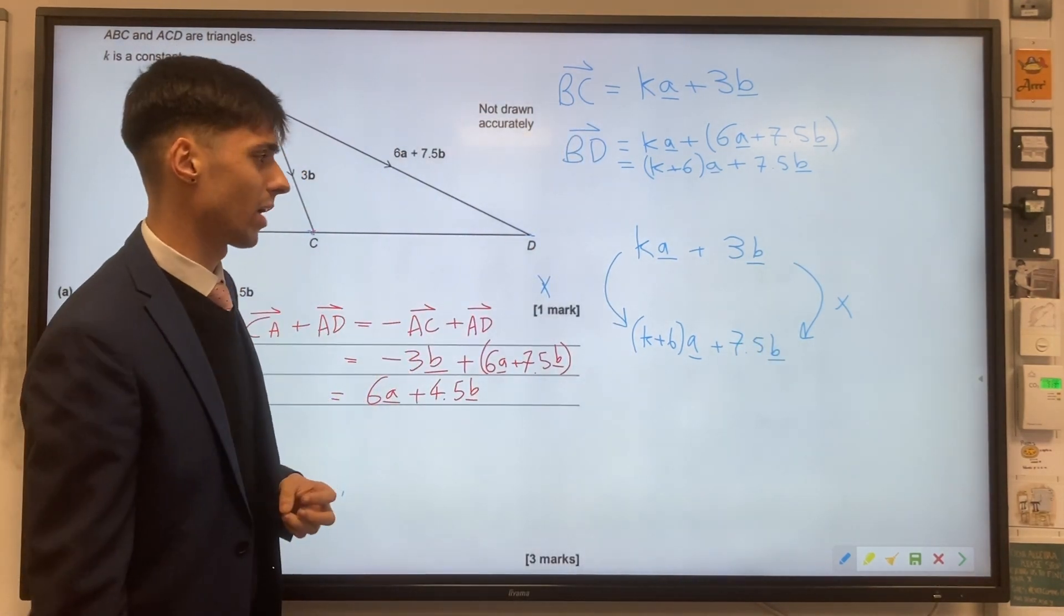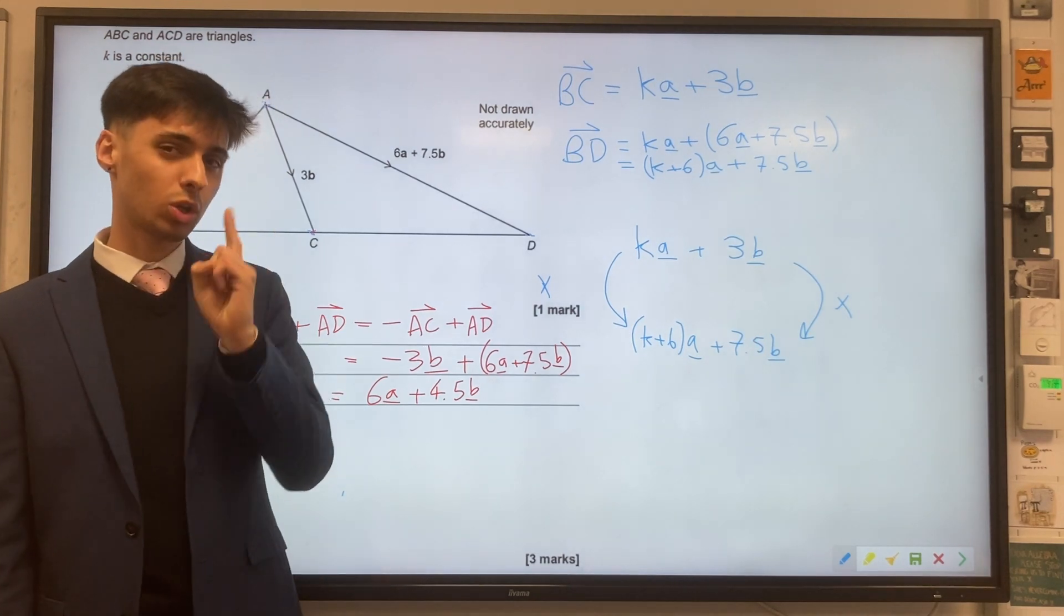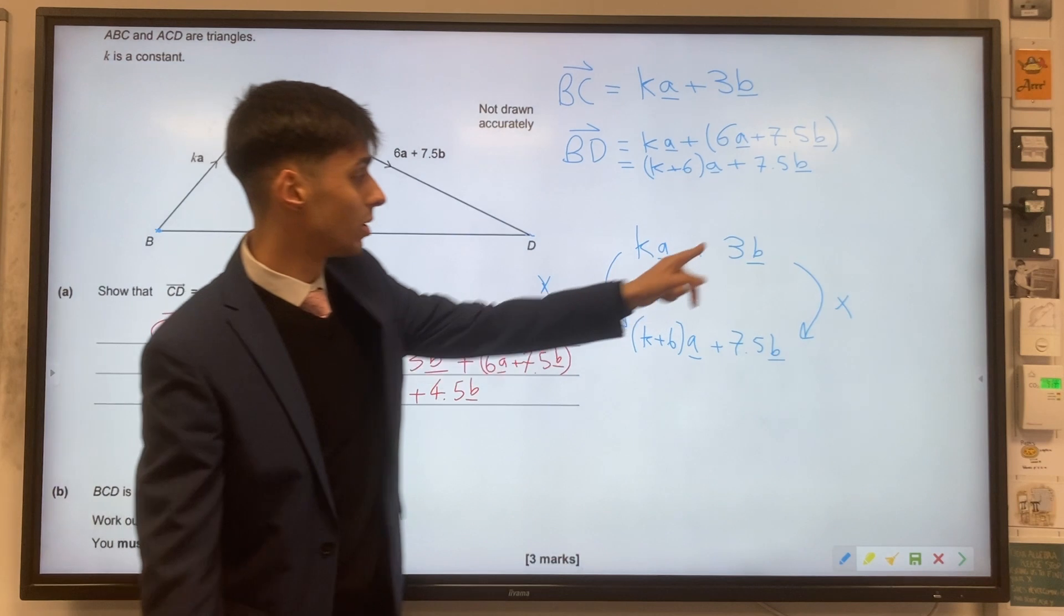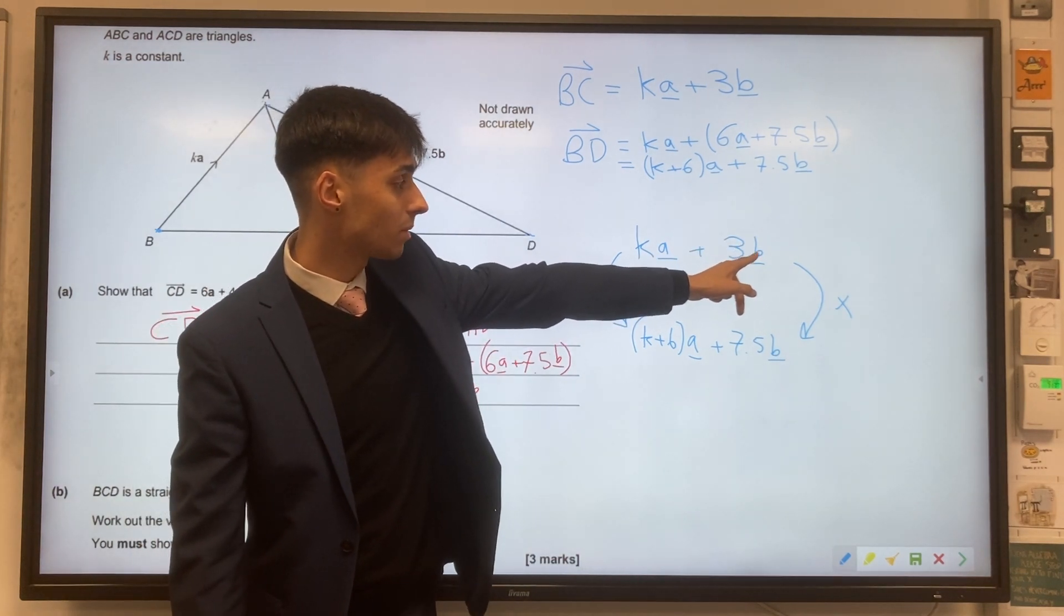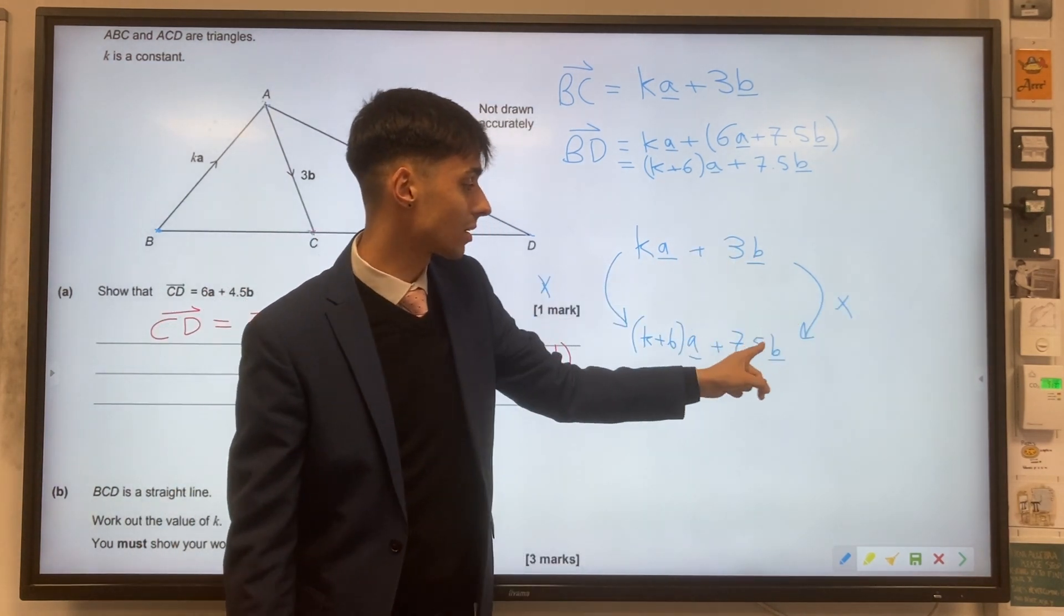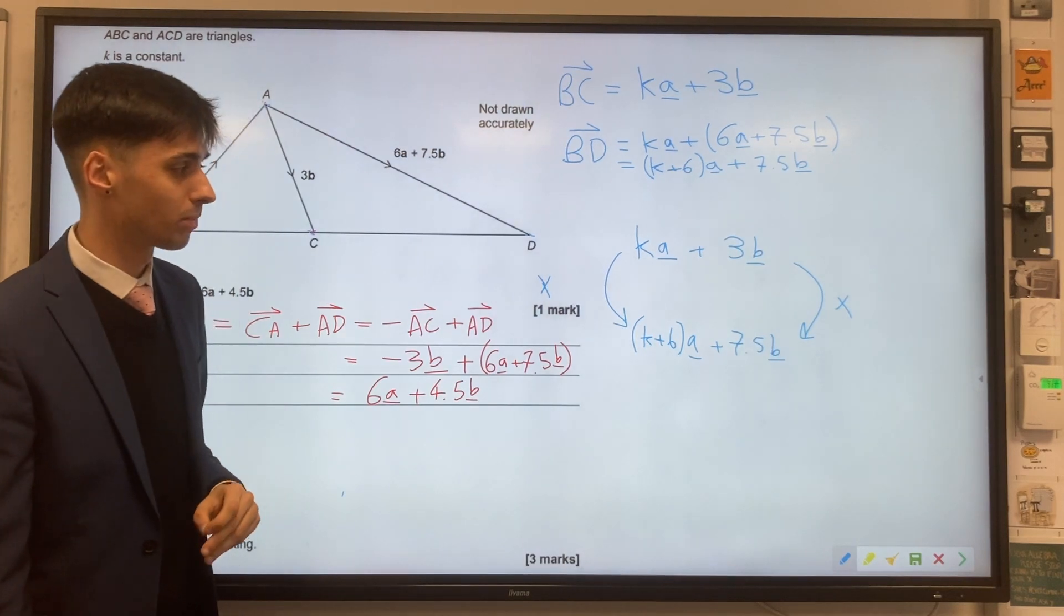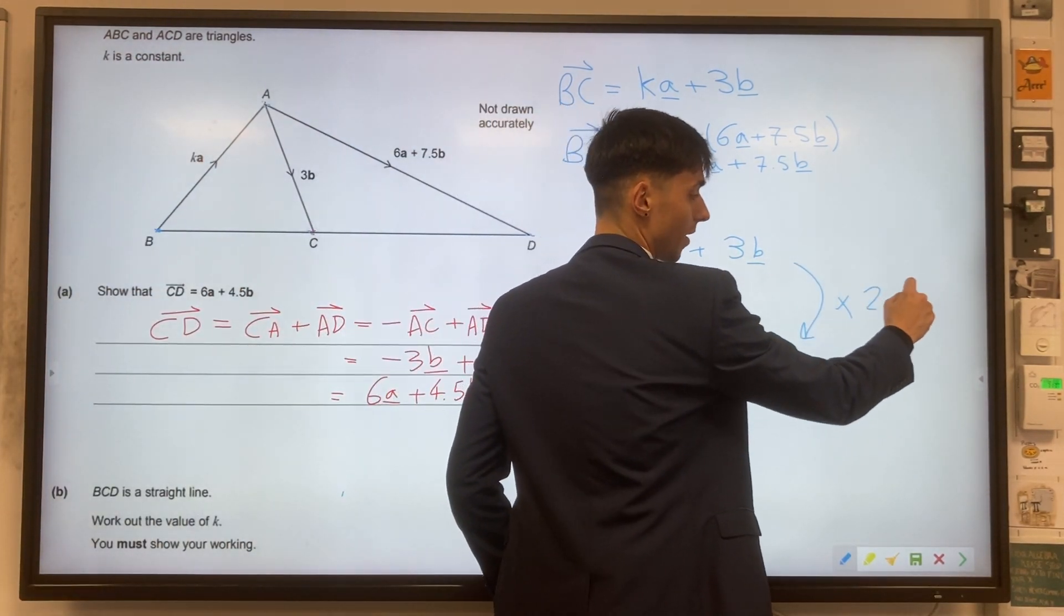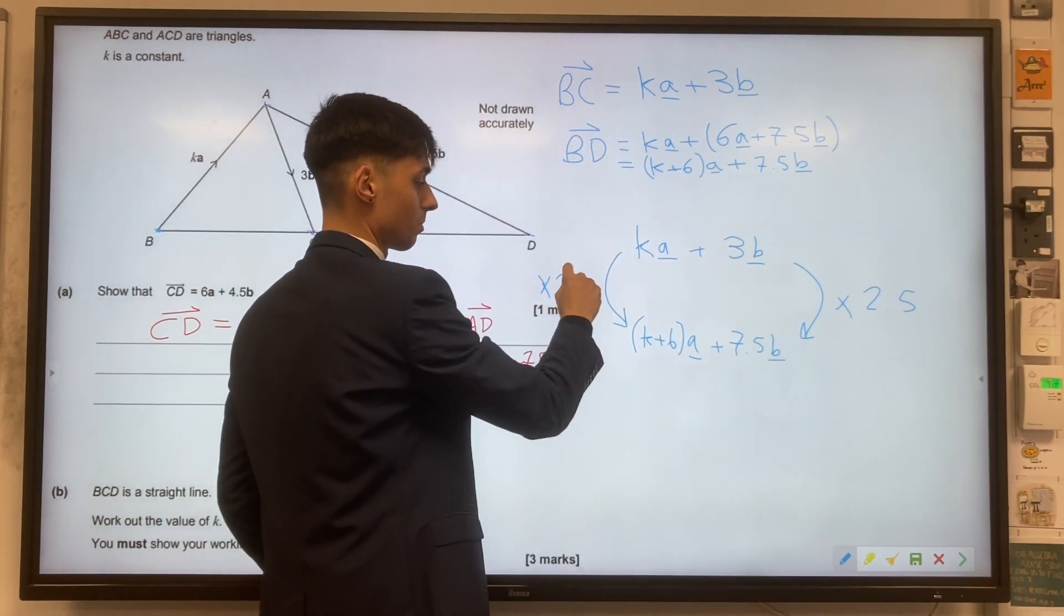So the number that we're multiplying by, we have one clue that tells us how to find this. We need to look at the B's because B has gone from 3 multiplied by something to get 7.5. So that missing number is 2.5. 3 times 2.5 to get to 7.5.